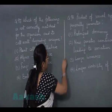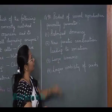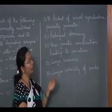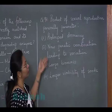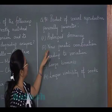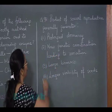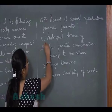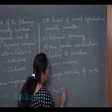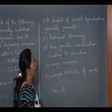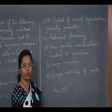Question 98: the product of sexual reproduction generally generates — the best choice among the four options is new genetic combinations leading to variation. So again our answer is option two.